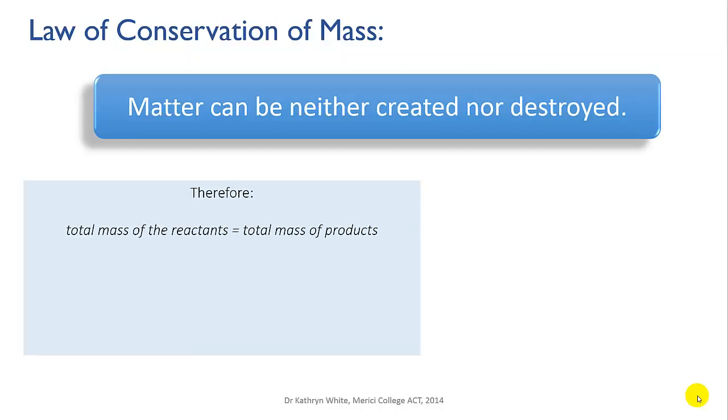This means that whenever a chemical reaction occurs, the total mass of the reactants must equal the total mass of the products, since mass cannot be gained or lost.